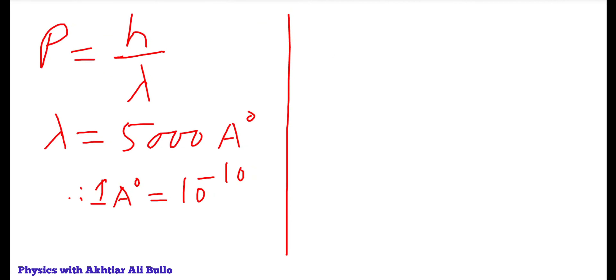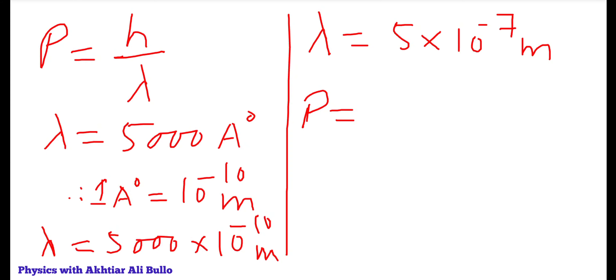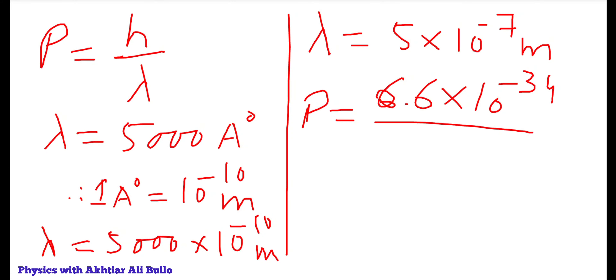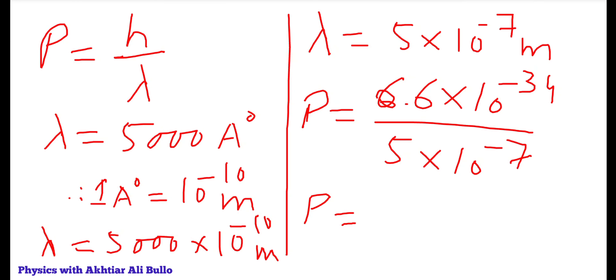Now by putting the given values, momentum will be obtained as p = h/λ, where h is Planck's constant = 6.6×10⁻³⁴, divided by λ = 5×10⁻⁷. So momentum will begin as 6.6/5 over the powers of 10.